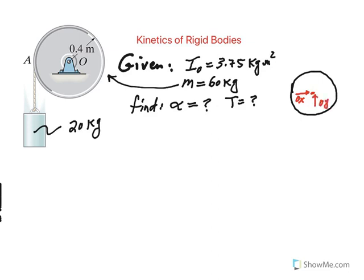We have reactions due to the bearing here at the center, OX and OY. We also have the weight, which is 60 kilograms times 9.81. And don't forget that this tension here is also an unknown. So we have the weight, the reactions at O, the typical X and Y components of reaction, and the tension.